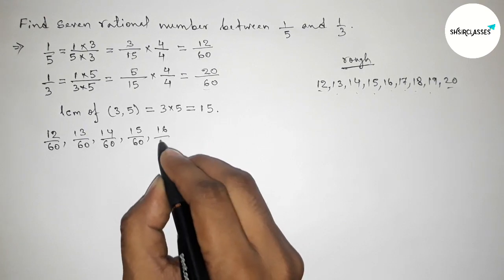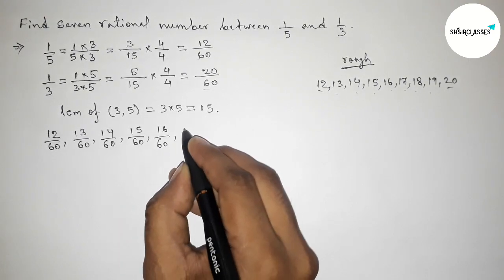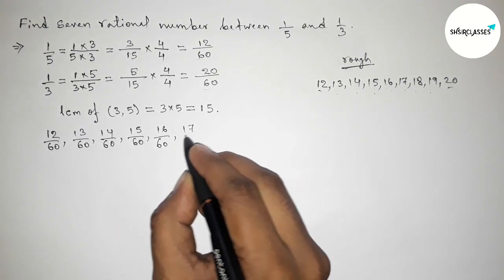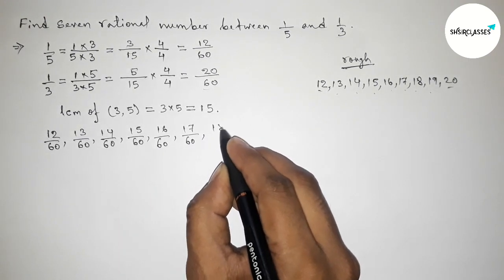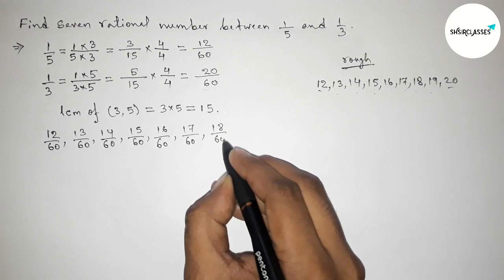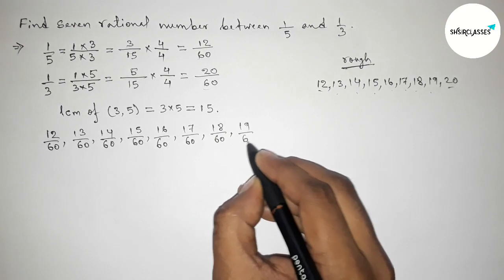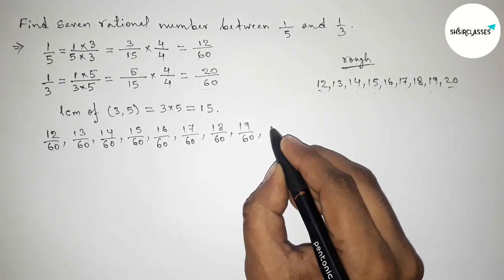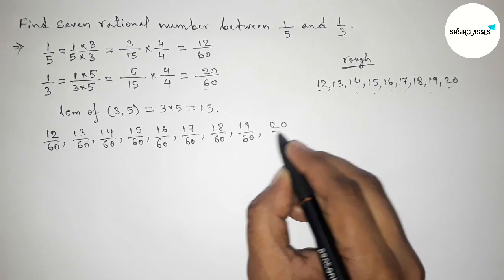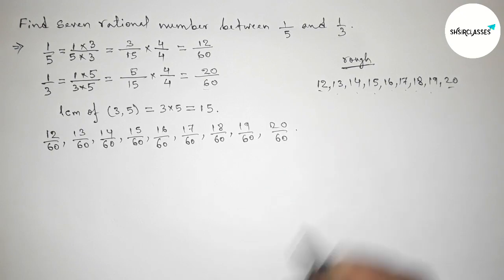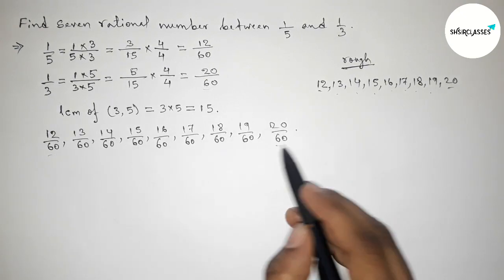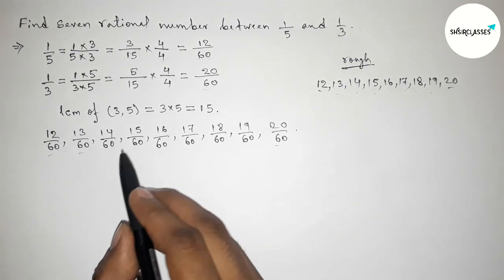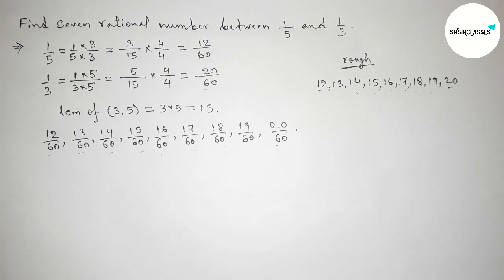So listing: 12 by 60, 13 by 60, 14 by 60, 15 by 60, 16 by 60, 17 by 60, 18 by 60, 19 by 60, and 20 by 60. Between 12/60 and 20/60 we can get 7 rational numbers.